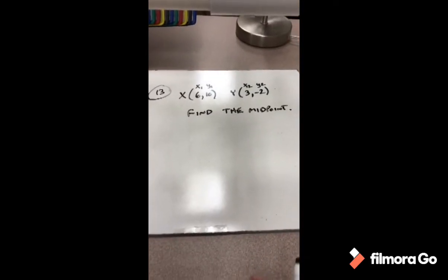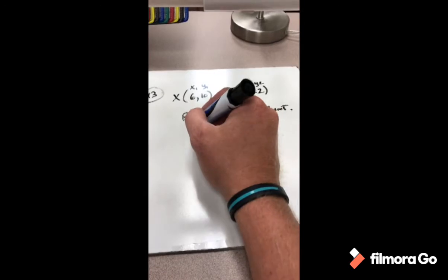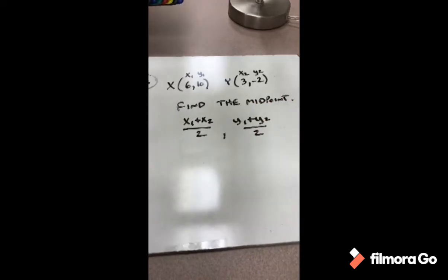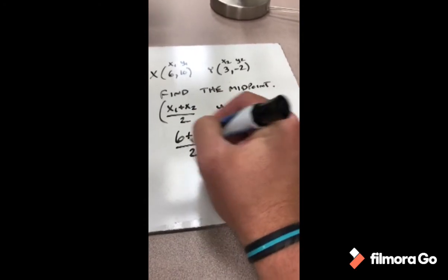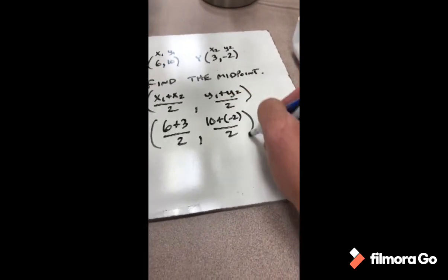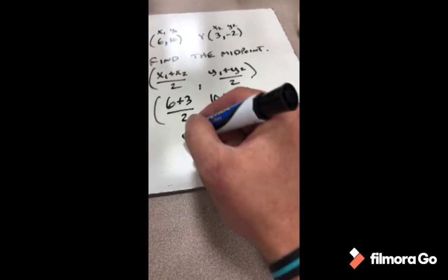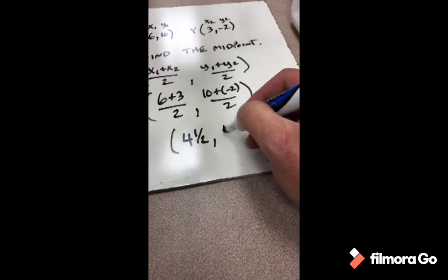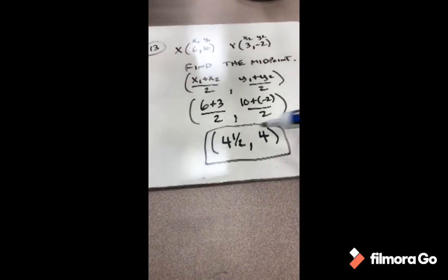For number 13, find the midpoint using the midpoint formula: ((x₁ + x₂)/2, (y₁ + y₂)/2). Plugging in: (6 + 3)/2 = 9/2 = 4.5, and (10 + (−2))/2 = 8/2 = 4. So the midpoint is (4.5, 4), where 4.5 is the x-coordinate and 4 is the y-coordinate.